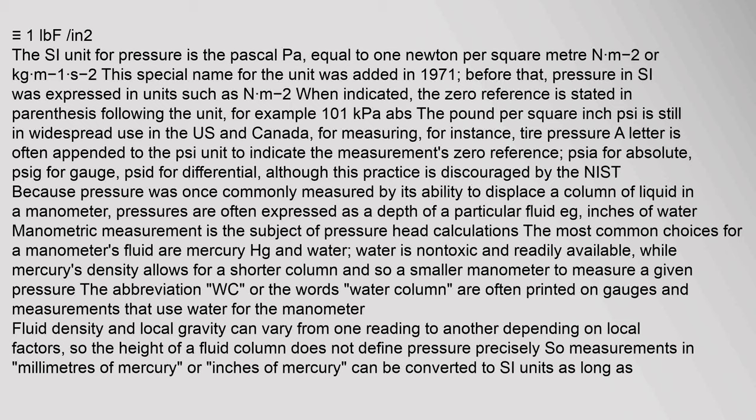The SI unit for pressure is the pascal (Pa), equal to 1 newton per square meter (N m⁻²) or kilogram m⁻¹ s⁻². This special name for the unit was added in 1971; before that, pressure in SI was expressed in units such as N m⁻². When indicated, the zero reference is stated in parentheses following the unit, for example 101 kPa abs. The pound per square inch is still in widespread use in the US and Canada. A letter is often appended to the unit to indicate the measurement's zero reference: psia for absolute, psig for gauge, psid for differential, although this practice is discouraged by the NIST.